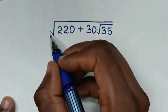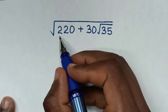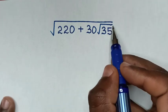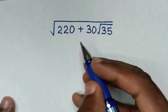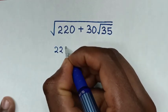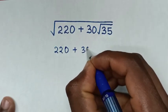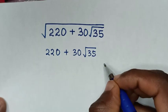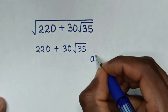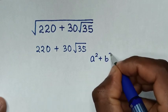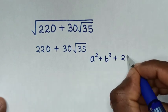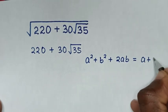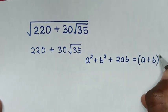Hello. How to simplify square root of 220 plus 30 square root of 35. So from this expression under the square root, which is 220 plus 30 square root of 35, we'll express it in the form of the algebraic rule: a squared plus b squared plus 2ab is equal to (a plus b) squared.